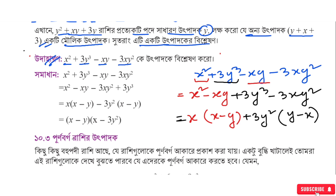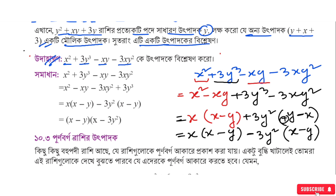Now because one bracket is (x - y) and the other is (y - x), we take minus to be common from the second group. So minus times (x - y). With minus minus becoming plus, we get: x(x - y) - 3xy² plus 3y³. The result simplifies with signs: minus minus gives plus.